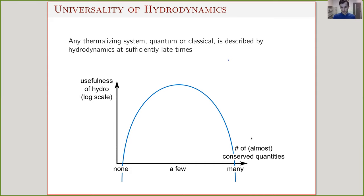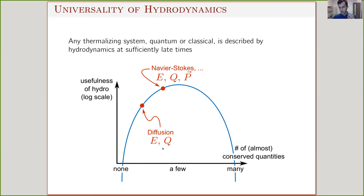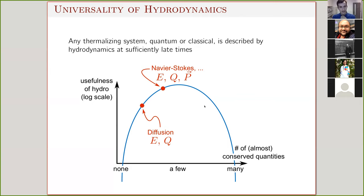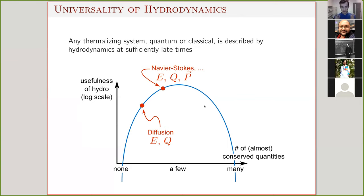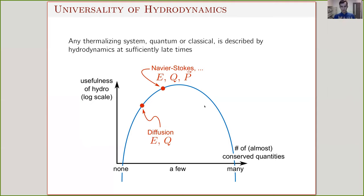Depending on the situation, if you just have conserved energy or charge — like in a lattice model — you might just get diffusion. In the cases we'll be interested in, there's also going to be conserved momentum, and there you have things like the Navier-Stokes equation. What's really surprising or fascinating here is that hydrodynamics is completely blind to the microscopic details — it only cares about the global symmetries.